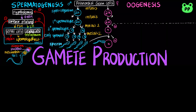Oogenesis refers to the development of mature oocytes or eggs and can take many years. Oogenesis begins in the female embryo with the production of oogonia from primordial germ cells through mitosis. The oogonia then divide by mitosis to form primary oocytes that begin meiosis, but stop the process at prophase 1 before birth.